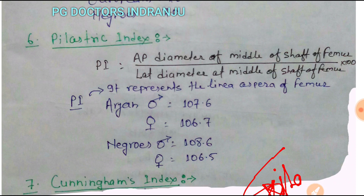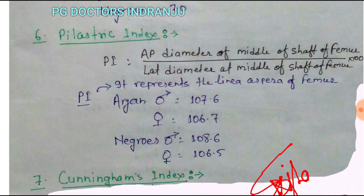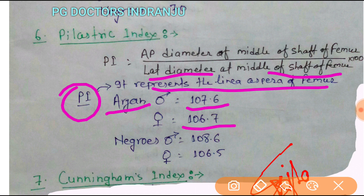Next is the pilastric index. The pilastric index equals the anterior-posterior diameter of the middle of the shaft of the femur divided by the lateral diameter of the middle of the shaft of the femur, multiplied by 100. It represents the linea aspera of the femur. In Aryans, males have 107.6 and females have 106.7. In Negroes, males have 108.6 and females have 106.5.